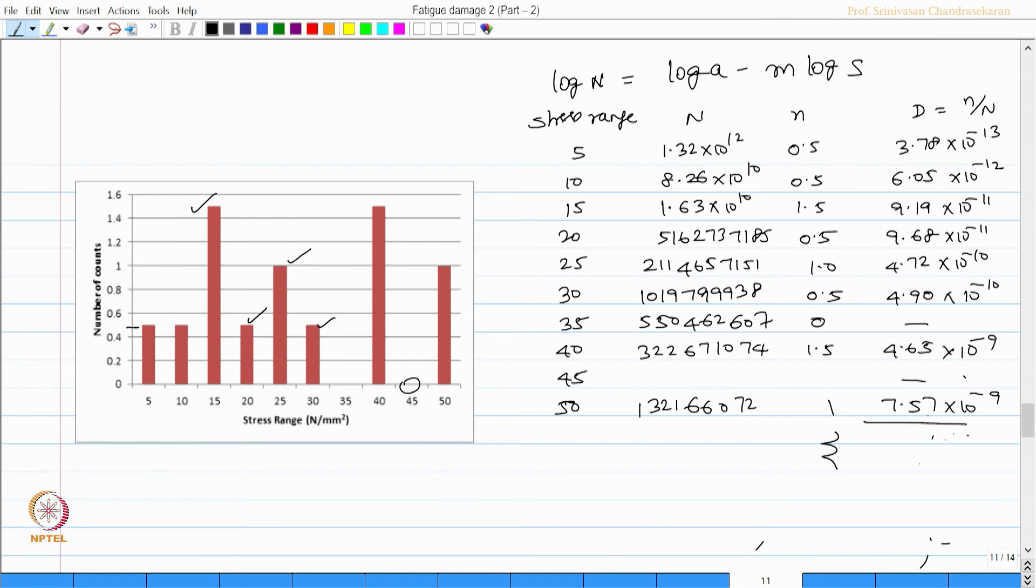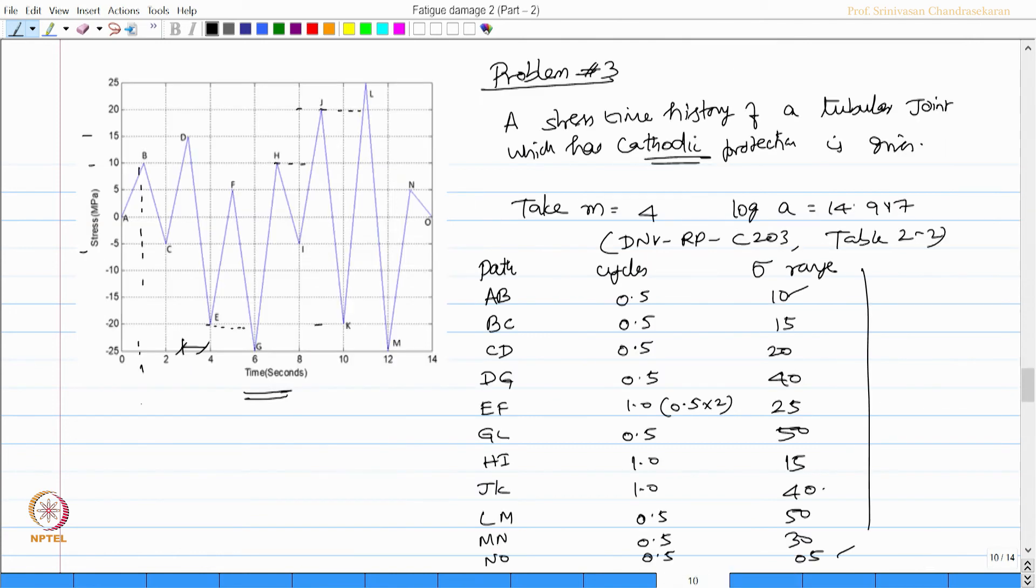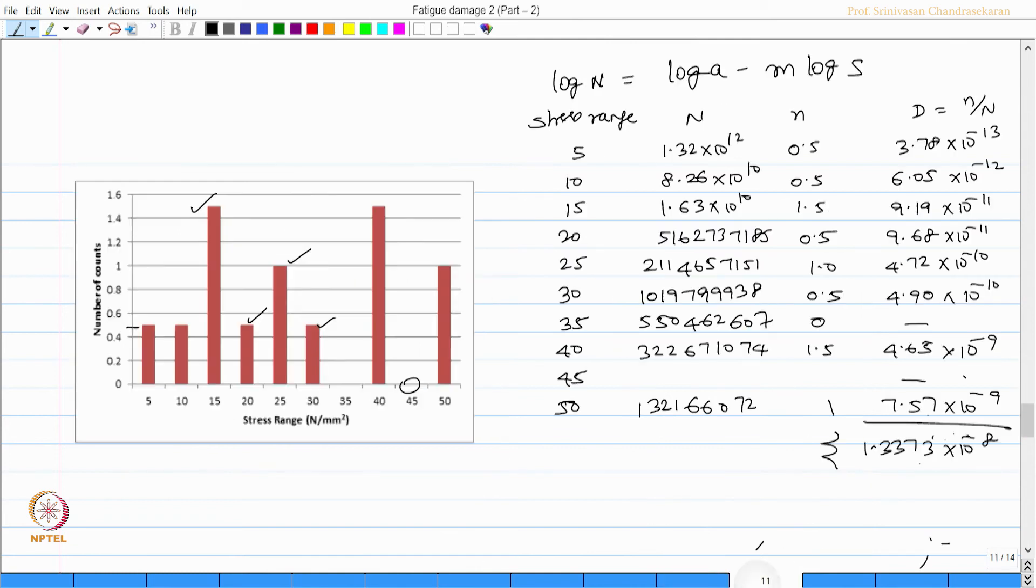Once I know this, the total duration is for 14 seconds. You can see here it is for 14 seconds. Therefore, the stress history is for 14 seconds and the damage estimated d is 1.3373 × 10^-8. Therefore, for 1 second I can find, which is 1.3373 × 10^-8 by 14. Therefore, for 1 year it can be 1.3373 by 14 × 10^-8 × 60 × 60 × 24 × 365. I get this value as 0.030124.